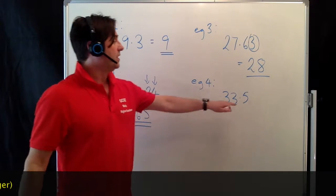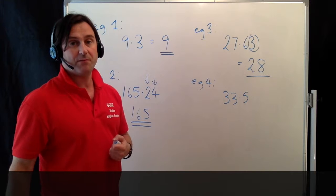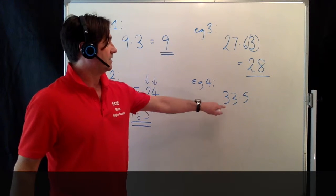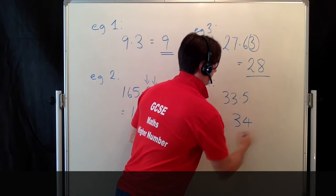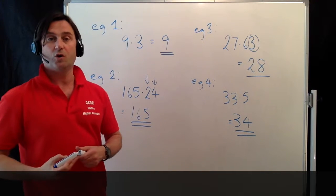So if the number's 5 or more, we always round up to the next whole number. So this one rounds to 34 to the nearest whole number or integer.